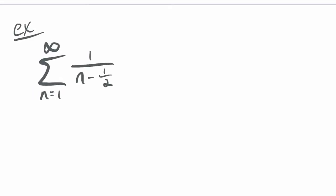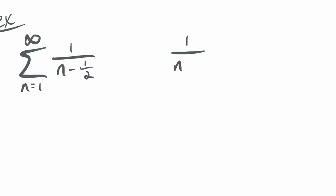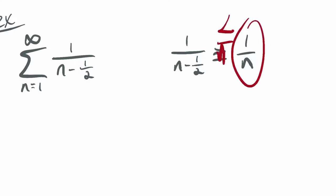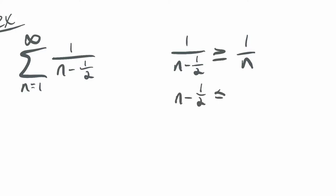How about this one: 1 over n minus one half. You might say it's pretty close to the harmonic series — that one half is the only difference. Let's compare it to the harmonic series. I know the harmonic series diverges, so I'm expecting divergence here. What I want to show is that this is greater than or equal to 1 over n. If I flip both fractions, n minus one half is less than or equal to n, which is true. Subtracting n on both sides: negative one half is less than or equal to zero — totally true.